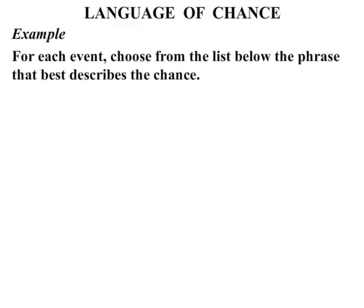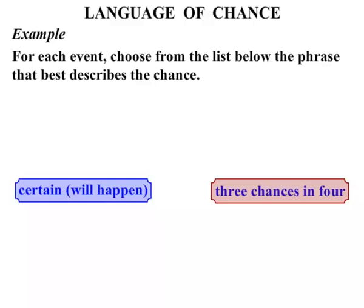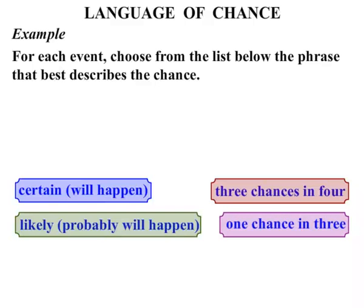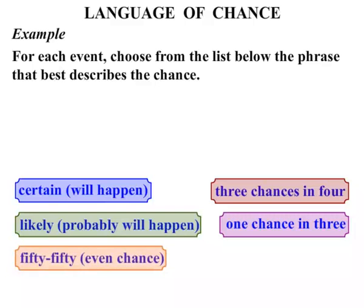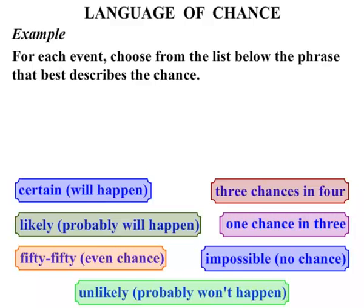Example: for each event, choose from the list below the phrase that best describes the chance. We're going to choose either: certain — which means it will happen; three chances in four; likely — probably will happen; one chance in three; 50-50 or an even chance; impossible — no chance; or unlikely — probably won't happen.